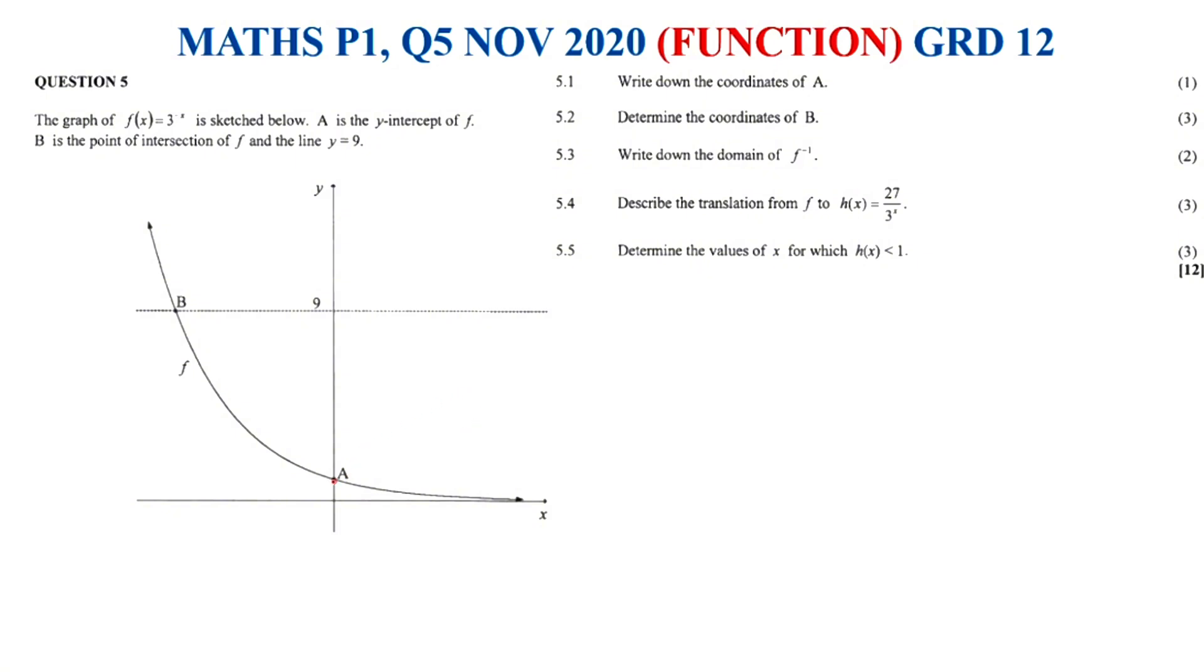Now let's have a look at that one. There is A, that is our y-intercept. We get the y-intercept when x is equal to 0, we all know that by now. And then we're also given by a line, a straight line given by y equals 9. So let's have a look at this question. It's got 5 questions, 5.1 up until 5.5, and at 5.1 they said we must find the coordinates of A.